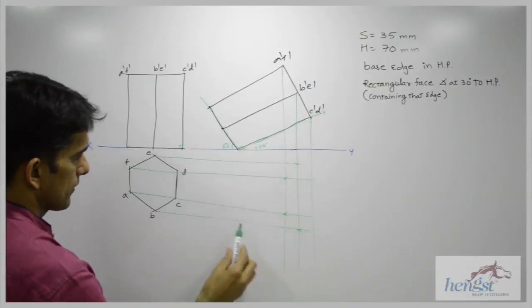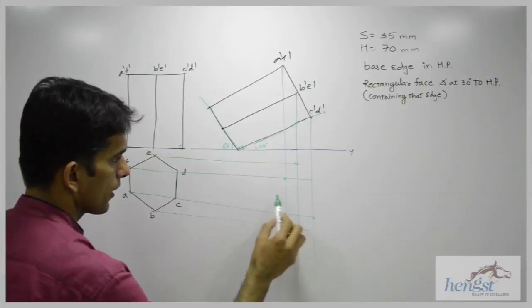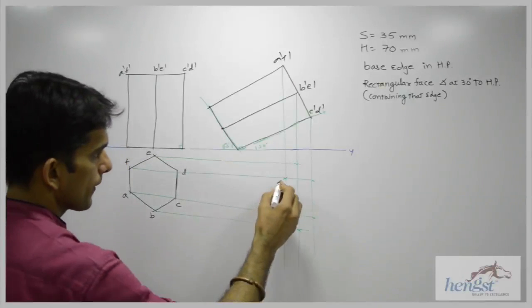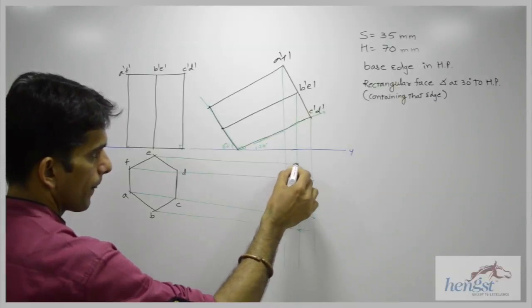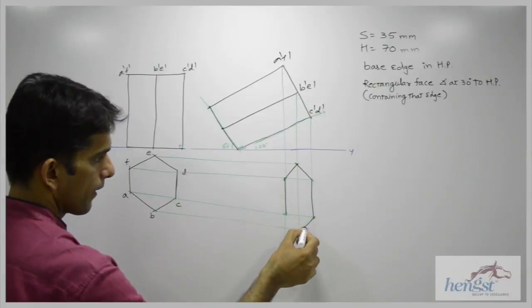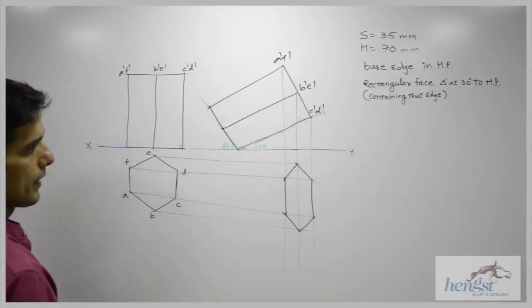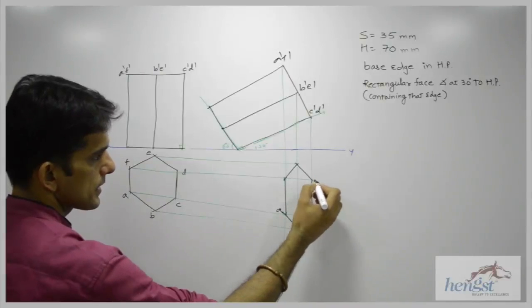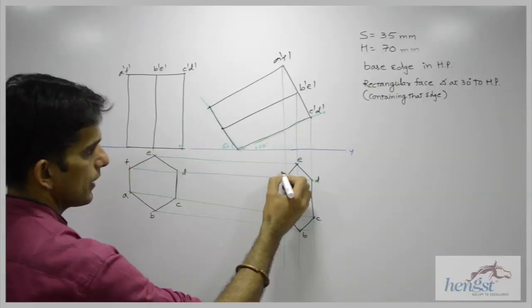Then c dash, d dash, c from here and d from here. So when you join, we get this. This is a, b, c, d, e, f.